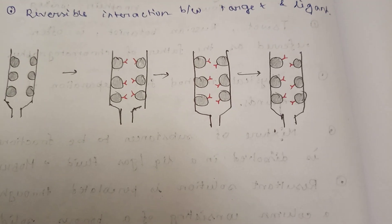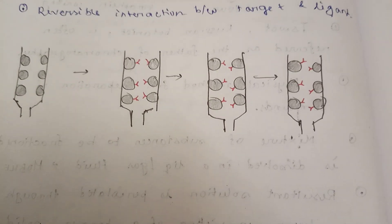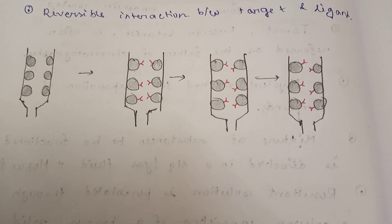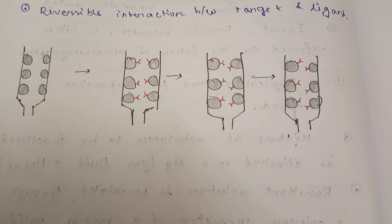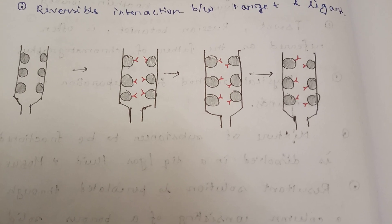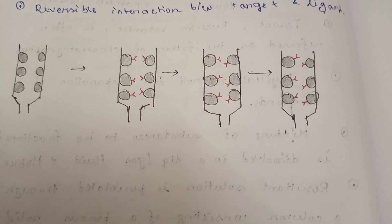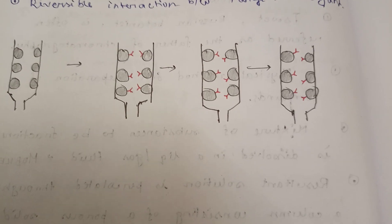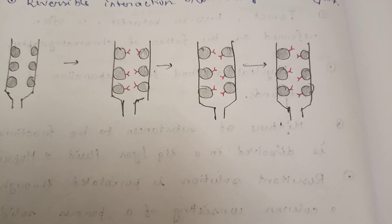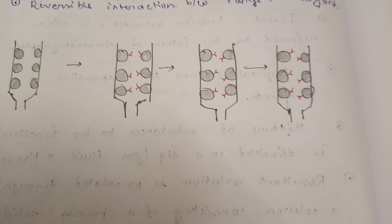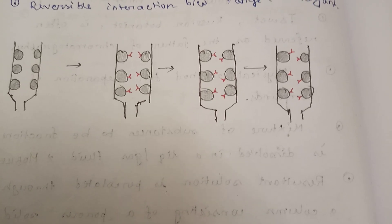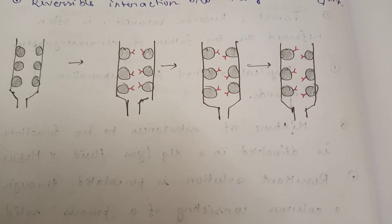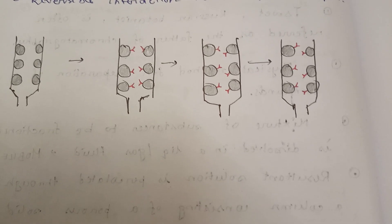It separates protein on the basis of reversible interaction like enzyme-substrate or antigen-antibody, or lectin-polysaccharide, or nucleic acid with complementary base sequence — for example, poly-A with RNA containing poly-U sequence, adenine and uracil. Or glutathione, where glutathione's target will be glutathione S-transferase.